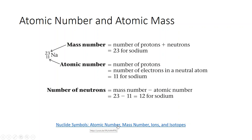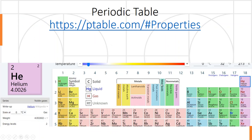On the periodic table, the atomic number never changes — the proton number is always the same. The atomic mass shown is actually an average of all the isotopes that exist for each element. There is an interactive periodic table available where you can explore properties, electron shells, and isotopes.